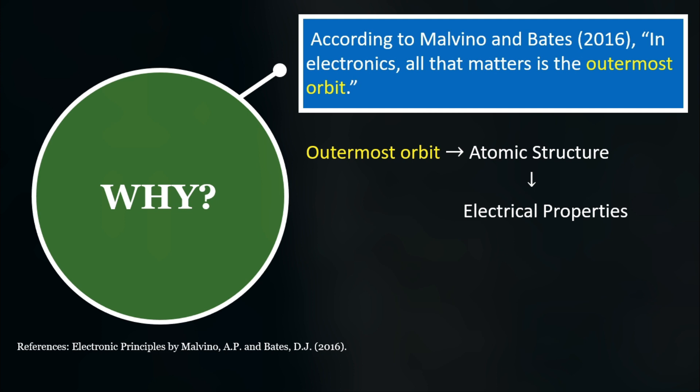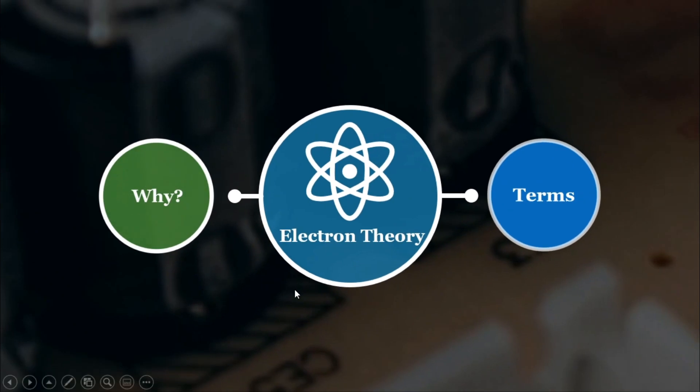Again, outermost orbit, atomic structure, electrical properties. Now, what are the various terms related to electron theory?